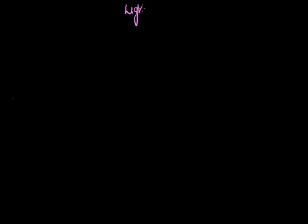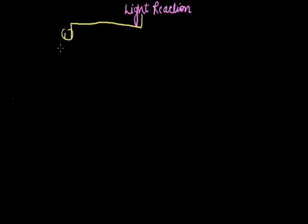When we study the details of the light reaction, it in turn is divided into three steps. Let us study those steps in a tabular form. The first step is called photo-excitation, and the second step is called photolysis.